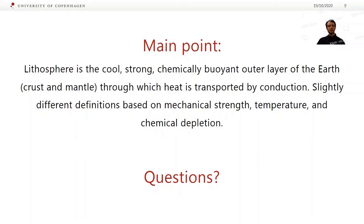The main point is that the lithosphere is the cool, strong, and chemically buoyant outer layer of the Earth. It includes the crust and the uppermost mantle, and heat is transported mainly by conduction. You get slightly different definitions based on mechanical strength, temperature, and chemical depletion.